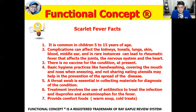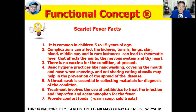Scarlet fever facts: it's common in children between 5 to 15 years of age, but it could also affect other age groups. Complications can affect the kidneys, potentially leading to glomerulonephritis. Assess for tea-colored urine, edema, puffy eyelids associated with facial edema, and elevated blood pressure — these signal that glomerulonephritis is developing. Other complications can affect the tonsils, lungs, skin, blood, and middle ear. In rare instances, it could lead to rheumatic fever affecting the joints, nervous system, and heart — potentially resulting in mitral valve stenosis or mitral valve regurgitation with murmurs.